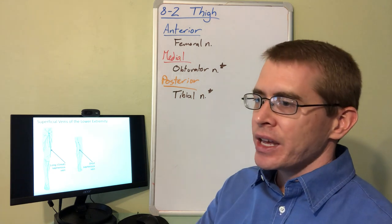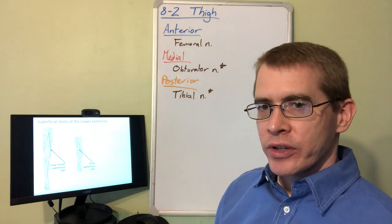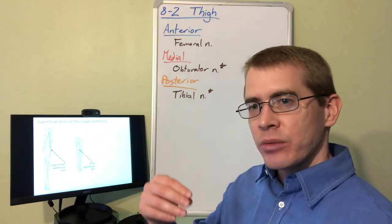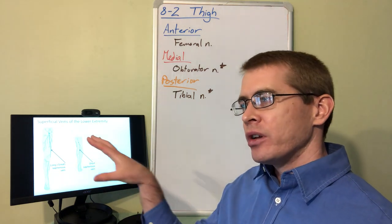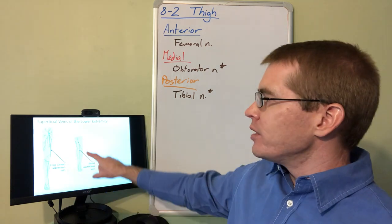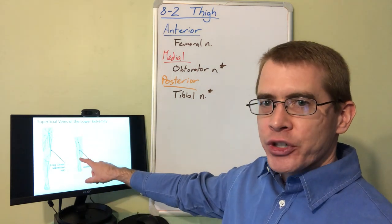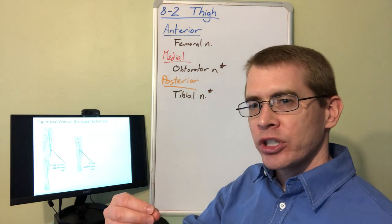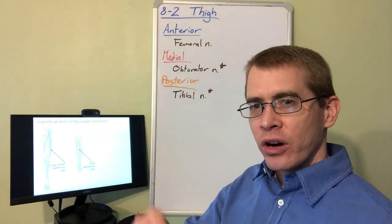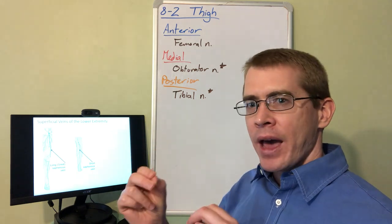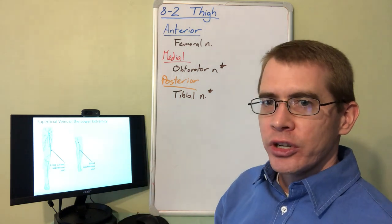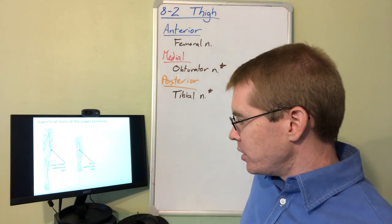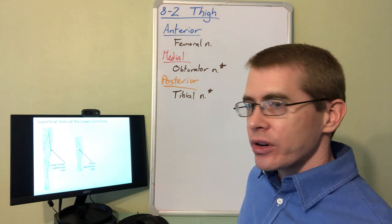These veins, especially the short saphenous vein, are sometimes used during cardiac bypass surgery. For instance, say that one of the arteries on the surface of the heart becomes occluded during surgery.